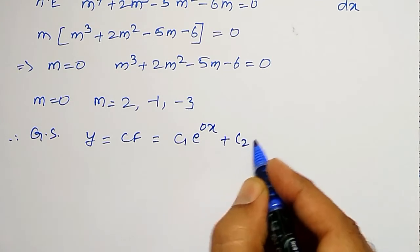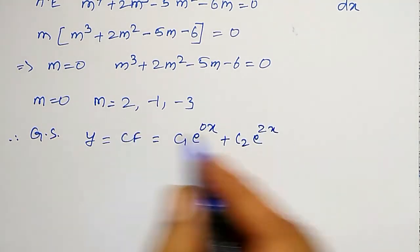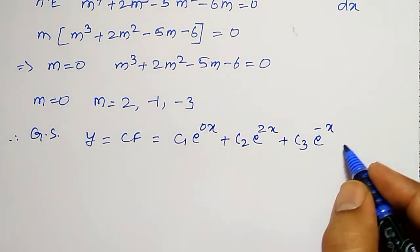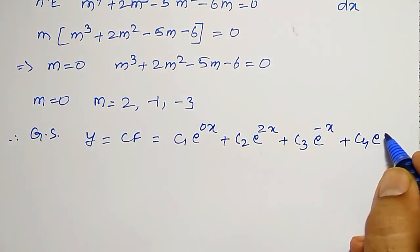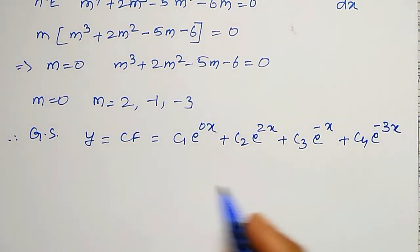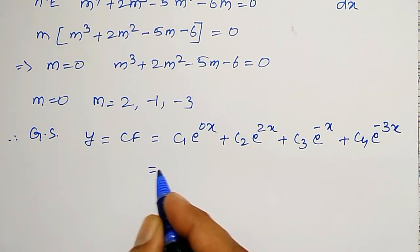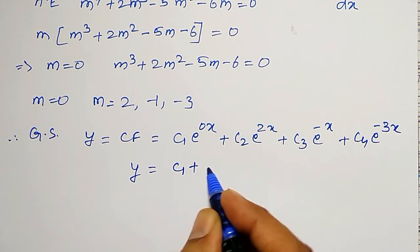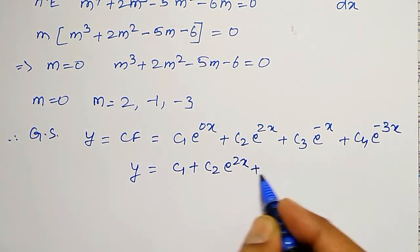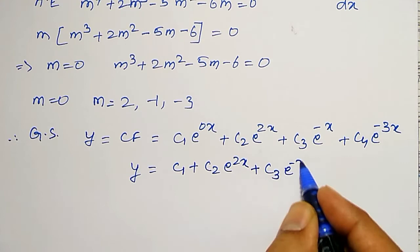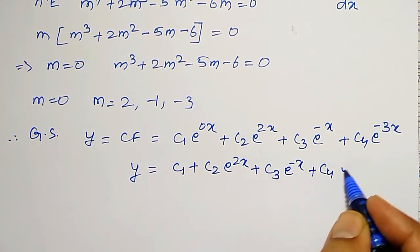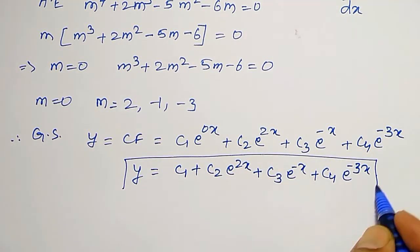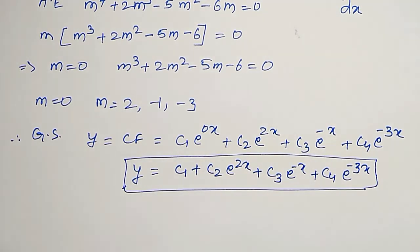plus c2e to the power 2x, plus c4e to the power minus 3x. Or, you can just write as c1 plus c2e to the power 2x, plus c3e to the power minus x, plus c4e to the power minus 3x, since e to the power 0 is 1. This is the solution for the required homogeneous differential equation.